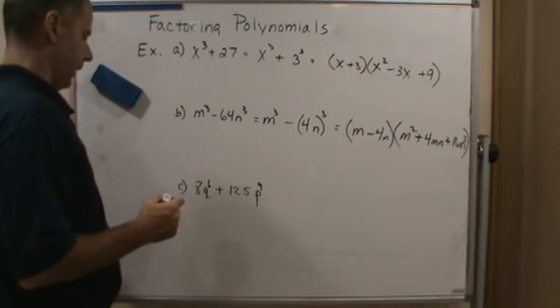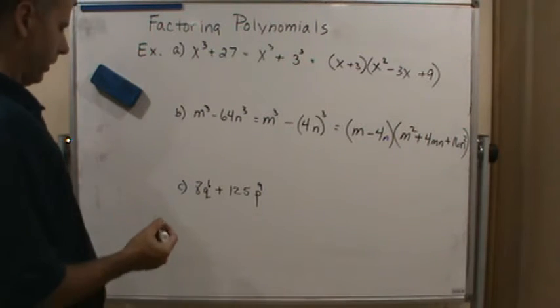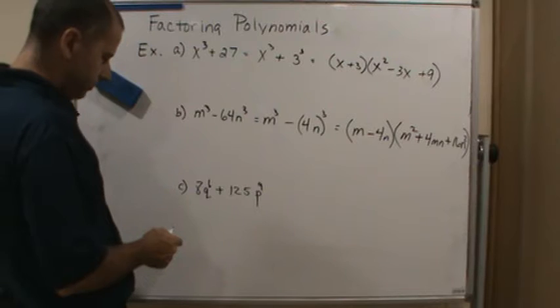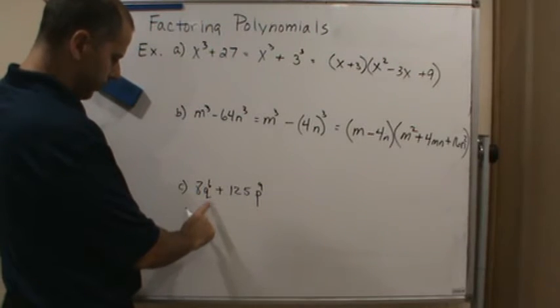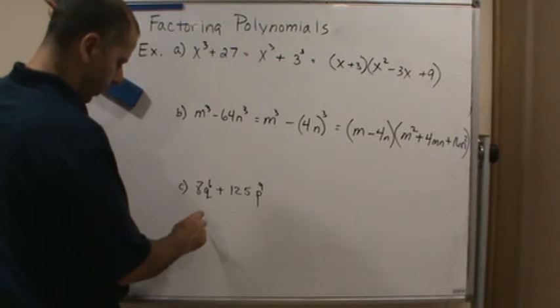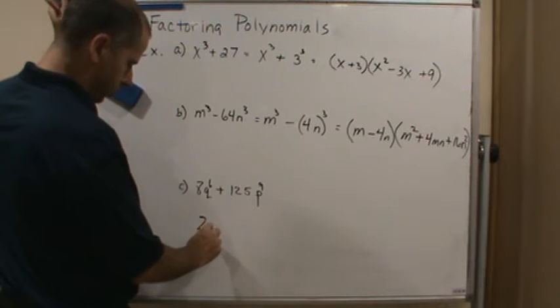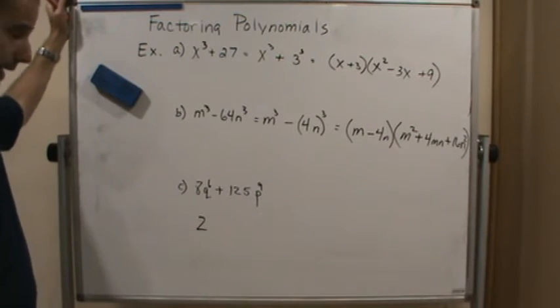And the last one. Let's see what we got here. So here, how can we write this as a cube? Well, that's going to be 2 cubed, right? Gives us 8.